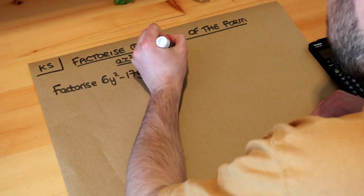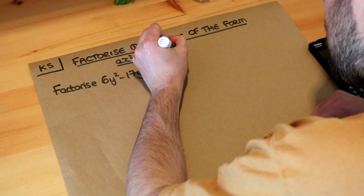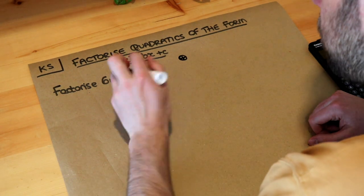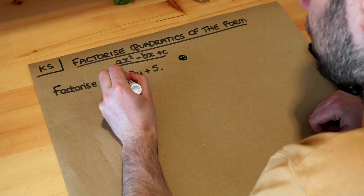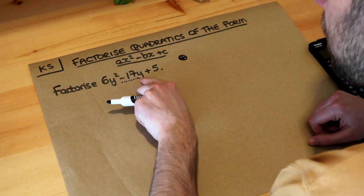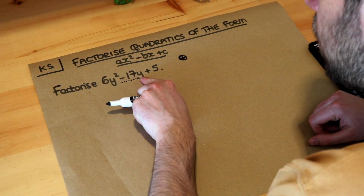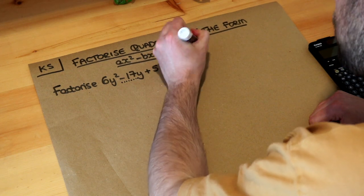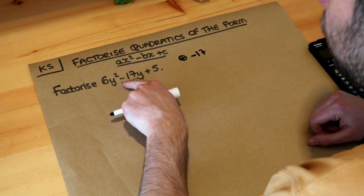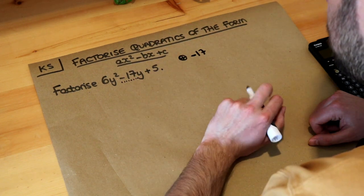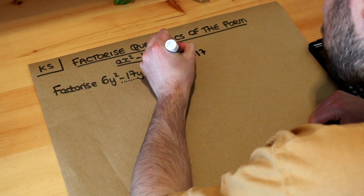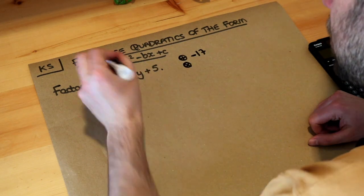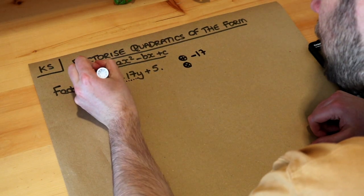We need two numbers that add to give the middle number, so we look at the number in front of the middle term. The coefficient of the y term here is minus 17, so we take that number in the middle including the sign on the front.